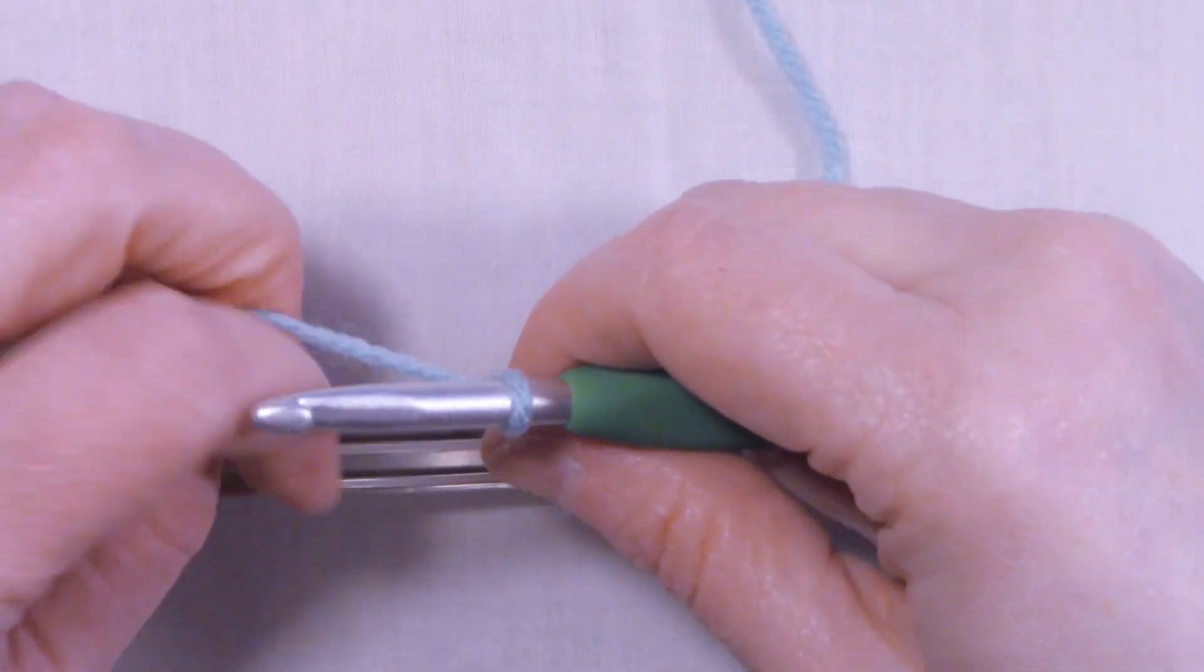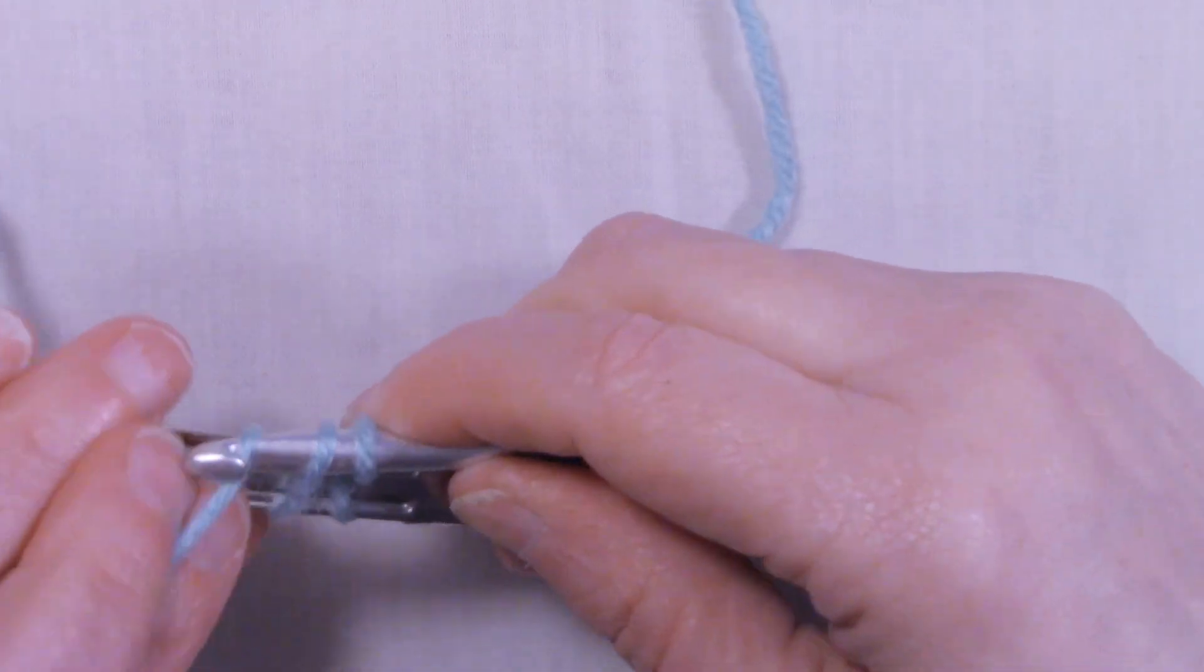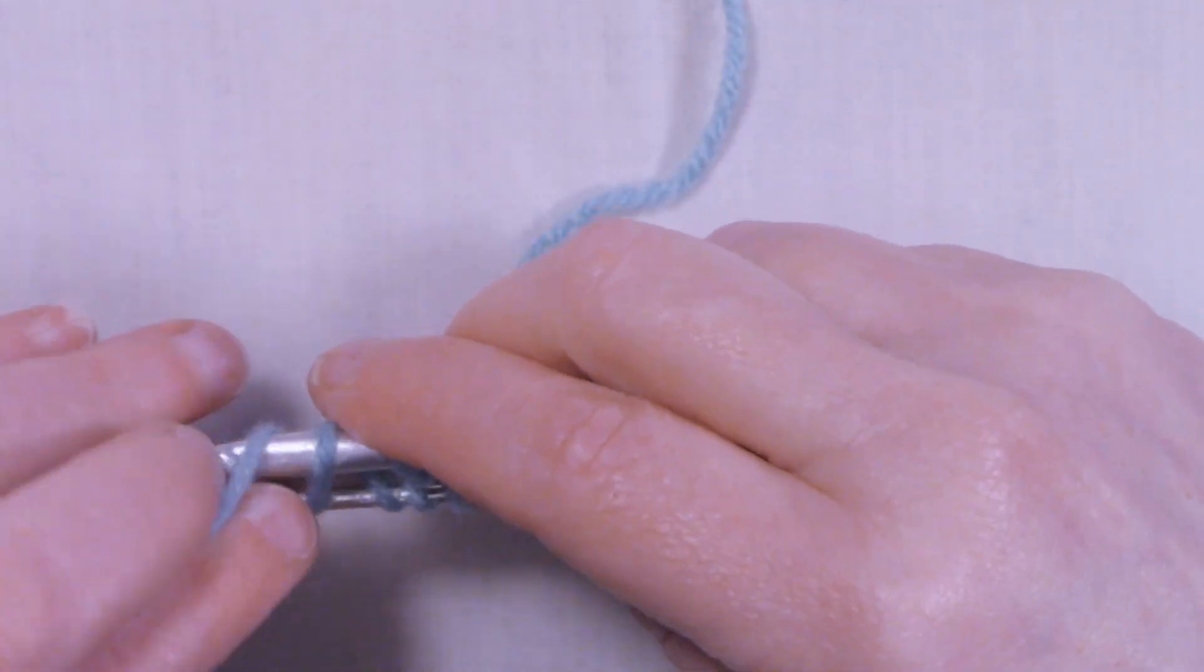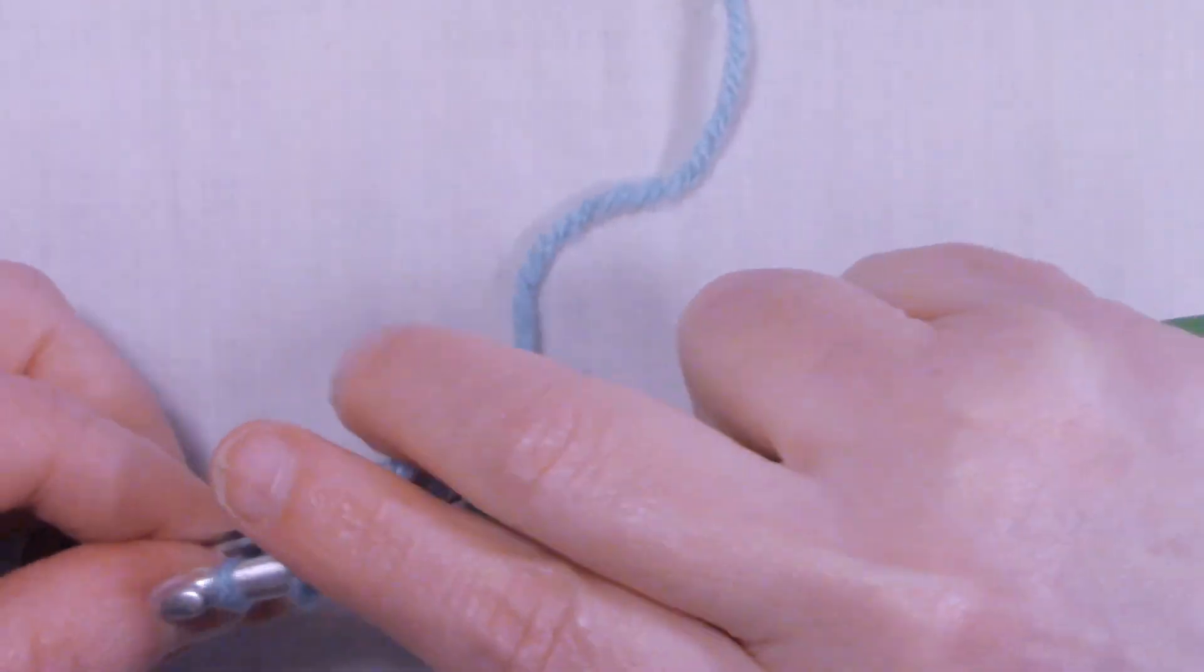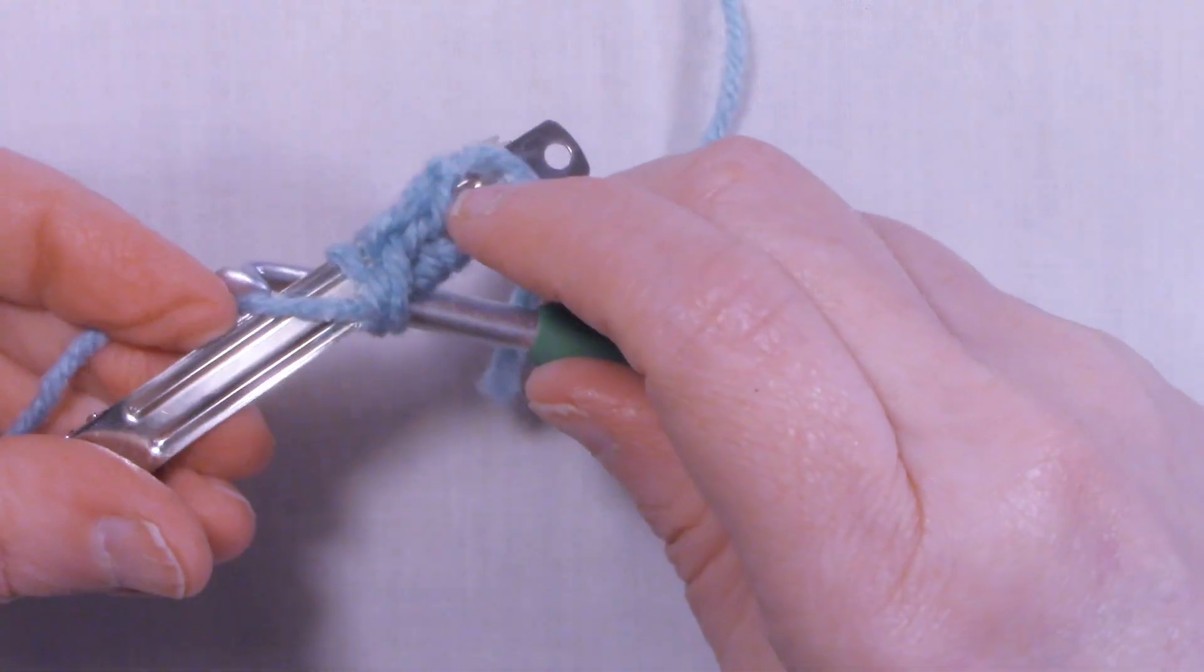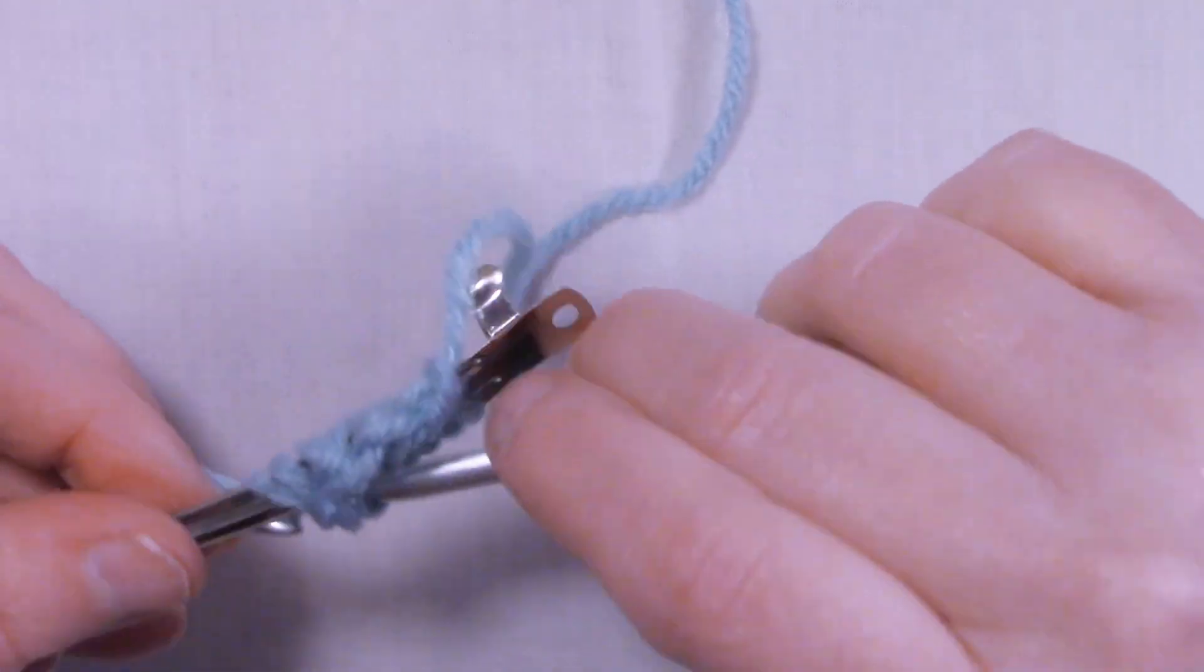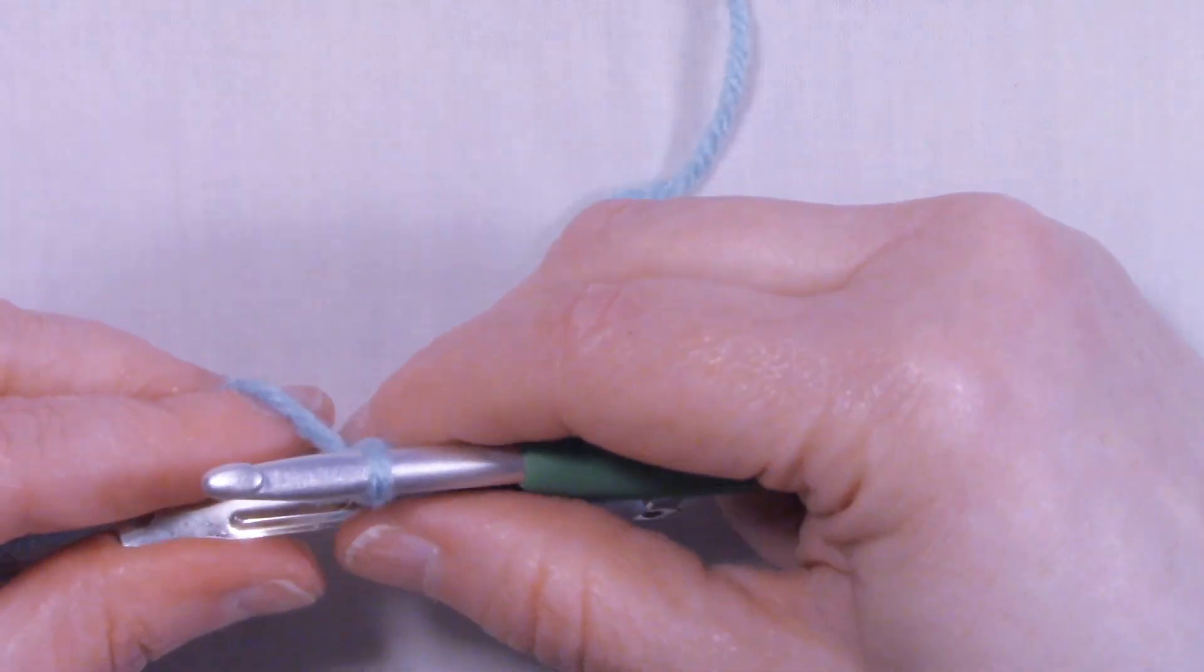Get your hook and your yarn, and we're going to single crochet around the base of the barrette. Just keep placing single crochets around the barrette. It doesn't really matter how many you put on there, there really isn't a set number.